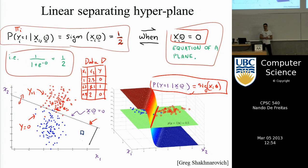Once you have the equation of the line, you just evaluate it. If x_i theta is less than zero, it's class 0. If it's greater, it's class 1.